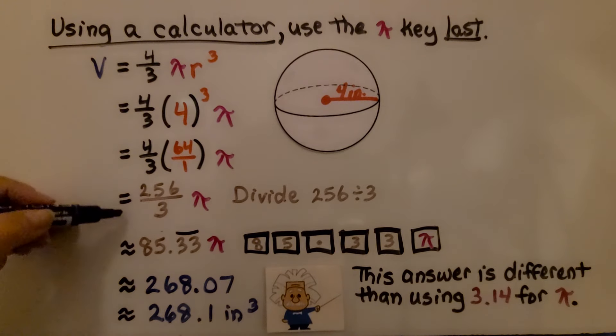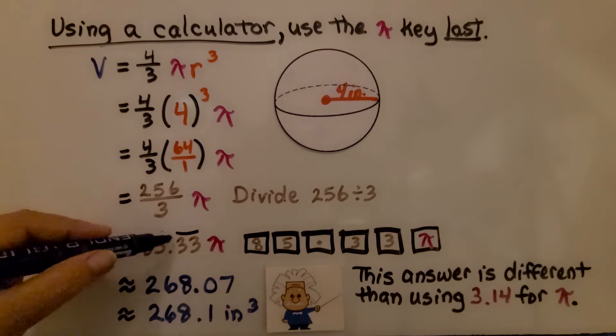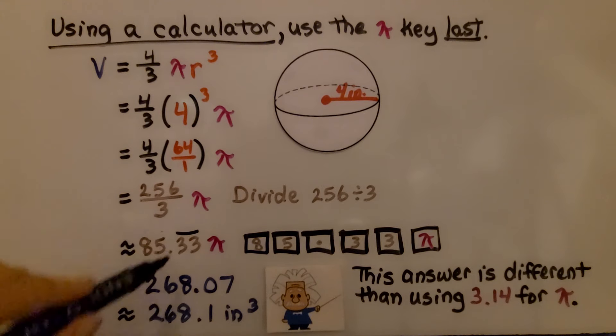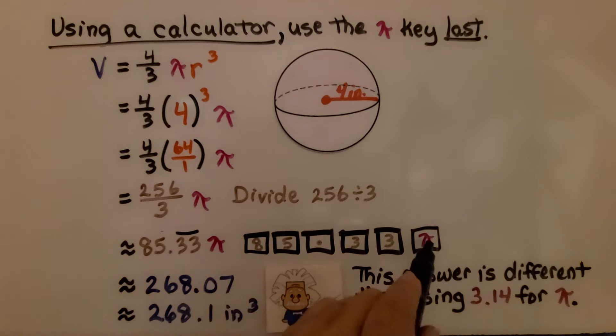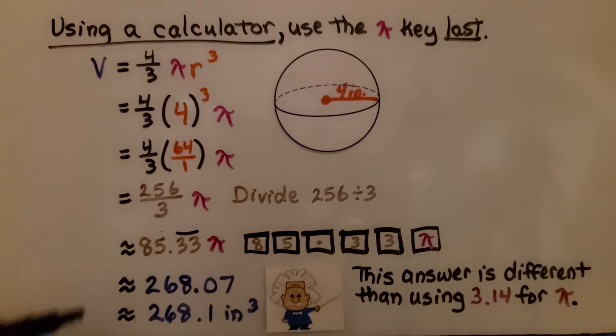So now notice that I switched to an approximation symbol because we're now doing a repeating 3. We can put in 85.33 pi into our calculator, hitting that pi key, and it'll give us 268.07. To round this to the nearest tenth, we would have approximately 268.1 inches cubed. Now this answer is different than using 3.14 for pi.